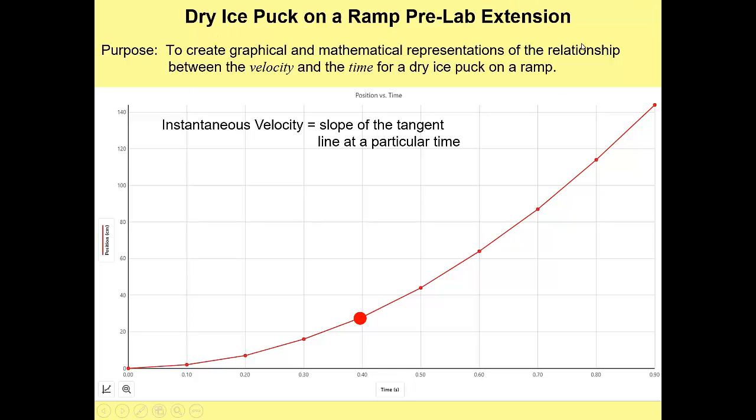Hence, what we are going to call a lab extension. It's called a lab extension because we're not going to actually take new data. We are going to create the new data from our old data, right? So we're building off the previous lab. So we're extending the lab, if you will. The purpose for the lab extension is right here, to create graphical and mathematical representations of the relationship between the velocity and the time for a dry ice puck on a ramp. So velocity and time is what we're going to do here. And you might want to print off the lab sheet or lab extension sheet for this, which is, of course, on the schedule doc.